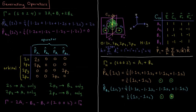That's how we use the generating operators to obtain orbitals which respect one of the EREPs within our given point group, making them suitable to be molecular orbitals for the resulting molecule.